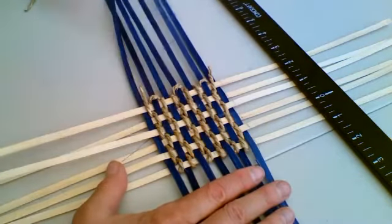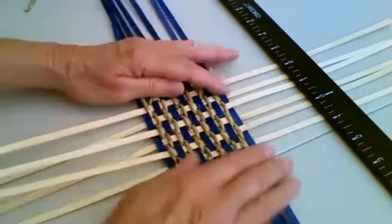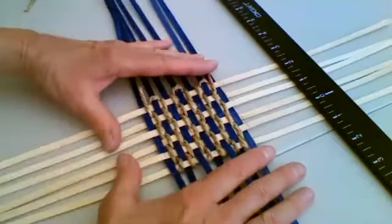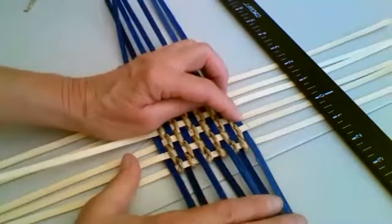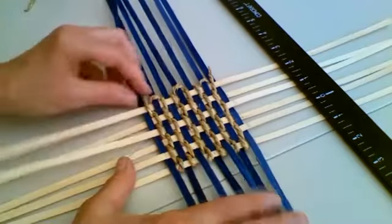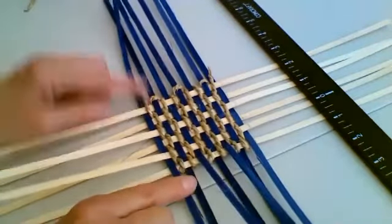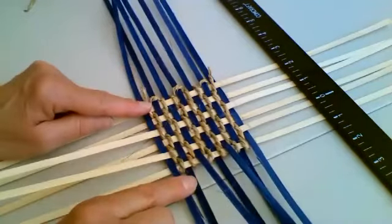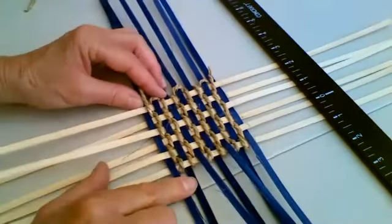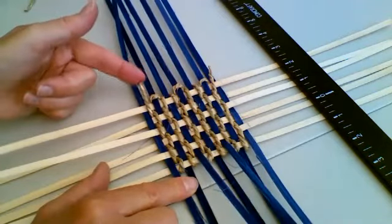Also notice that because we have seven rows of color and six rows of natural, the color begins and ends this base. So we have one extra piece of color here at the bottom. We don't end with the seagrass, we end with the flat oval reed. I've left the tails of the seagrass here, which will catch in the next step.